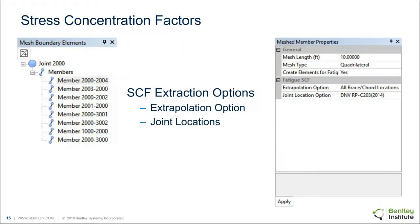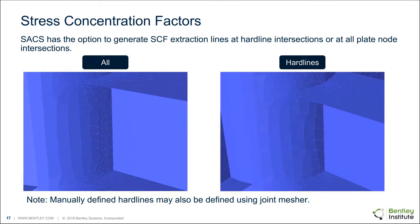The extrapolation method and joint location method give you further options. The joint location option allows you to either generate SCF extraction lines at all points along the connection, or only at the hard line locations. With the 'all' option, extrapolation lines are generated on the chord and brace all around a wide flange connection. With the 'hard line' option, you only see lines at the web and edges of the flanges. When you do this mesh, you also have the option to add additional manually defined hard lines, which will also have SCFs generated for them.